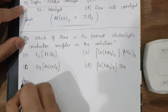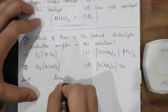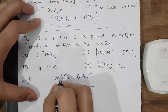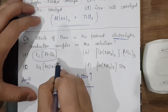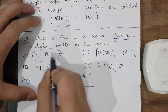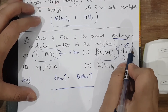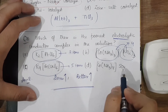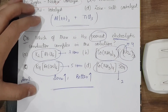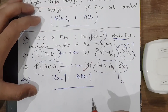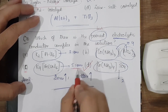The next question asks which complex is the poorest electrolytic conductor in solution. More ions in solution means better conductivity. For K₂[PtCl₆], we get 2 K⁺ ions plus 1 complex ion = 3 ions. The next option gives 4 ions total, and another gives 5 ions. The last option gives only 2 ions — so it is the poorest electrolytic conductor. If asked the best conductor, it would be the option giving 5 ions.